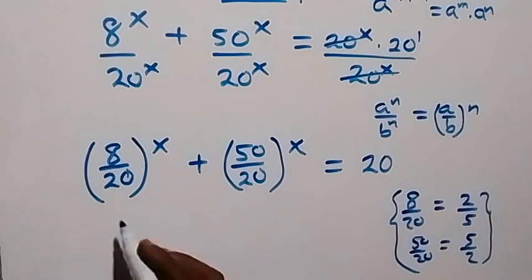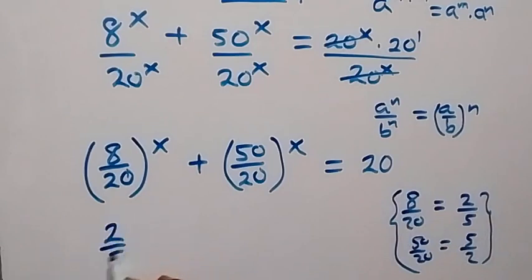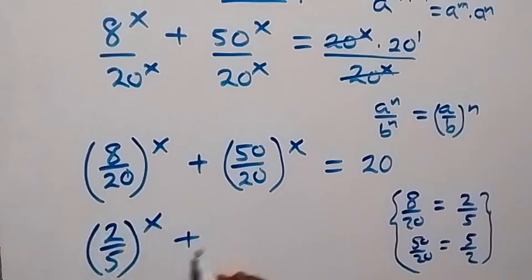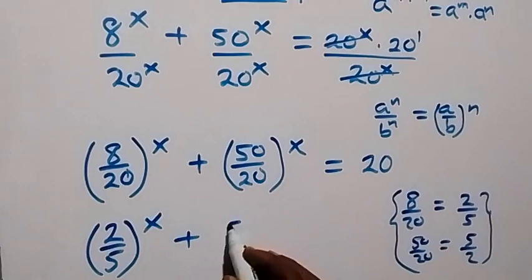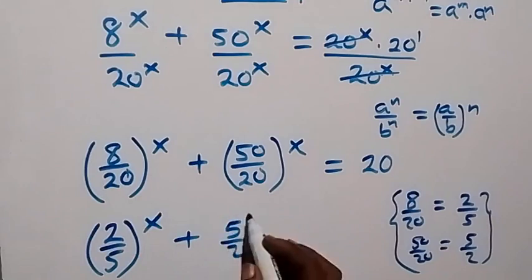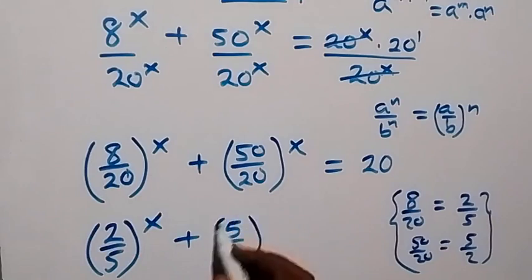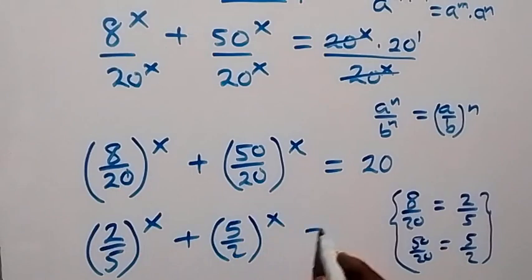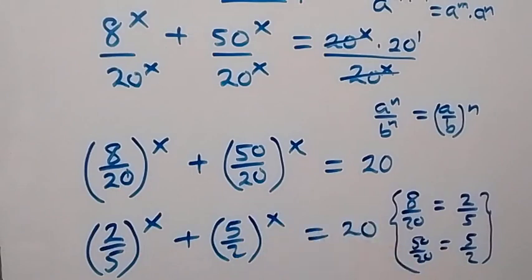This now will be written as (2 over 5) raised to power x, then plus (5 over 2) raised to power x, now equals 20 on this side.